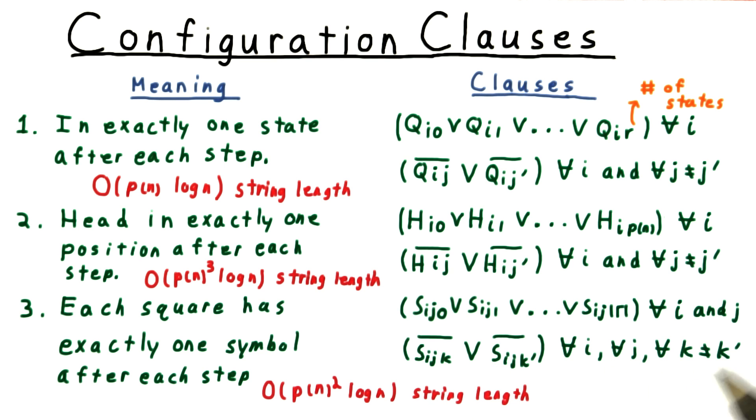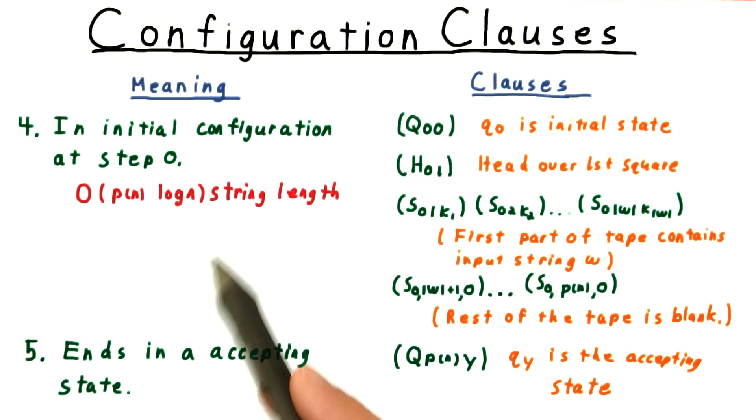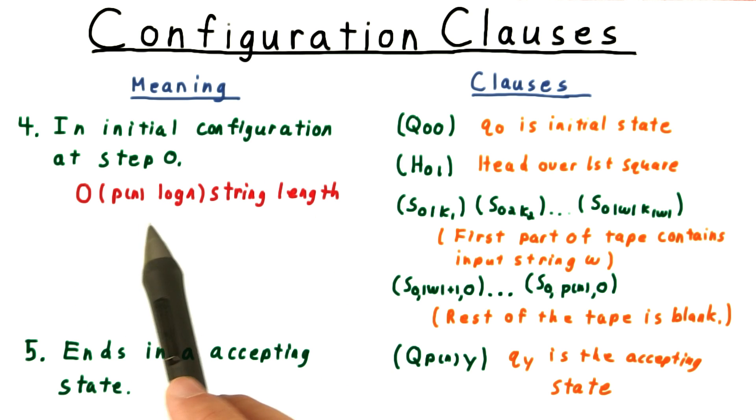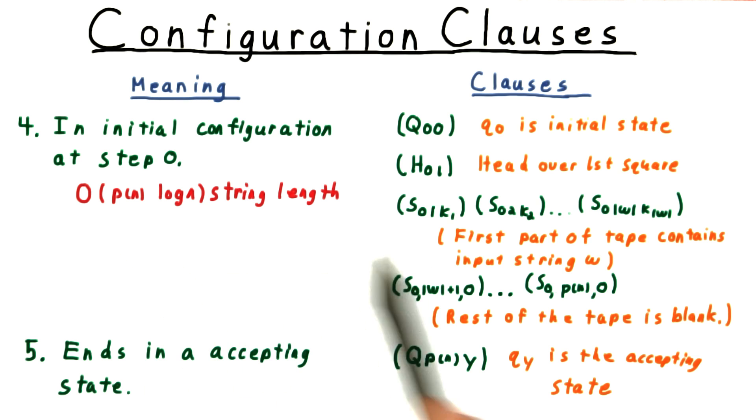The size of the alphabet is a constant in this context. As for the constraints pertaining to the initial configuration, these require order p log n string length. The dominant factor being the constraints about the contents of the tape. And the constraint that the computation be accepting requires only log n string length, since it just has to write out this single literal one clause here.